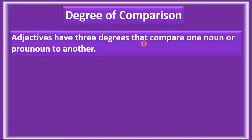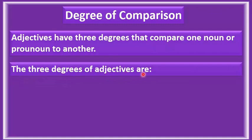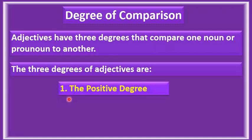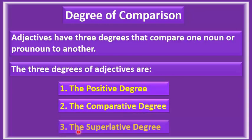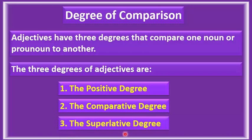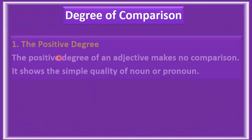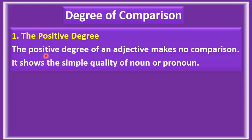Adjectives have three degrees that compare one noun or pronoun to another. The three degrees of adjectives are: number one, the positive degree; number two, the comparative degree; number three, the superlative degree. Now let's learn each of them in detail.